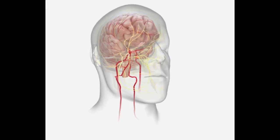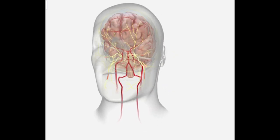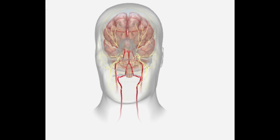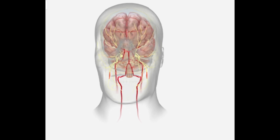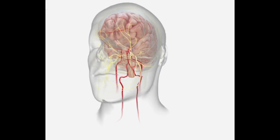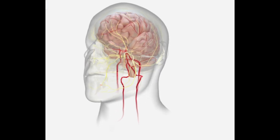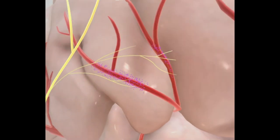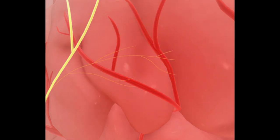In the vasodilatation phase, compensatory dilatation of the meningeal and extracranial vessels, including the middle meningeal artery and external carotid artery, generates the characteristic pulsatile headache. This vasodilatation activates the trigeminovascular system, promoting the release of CGRP.